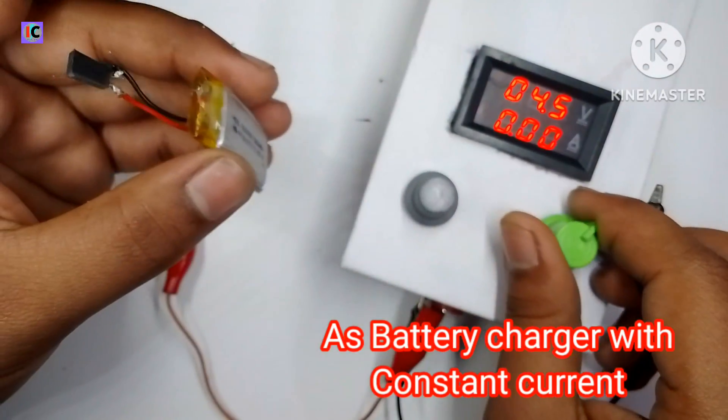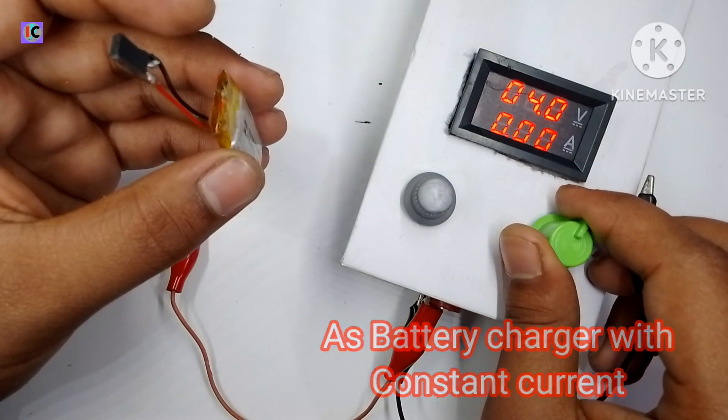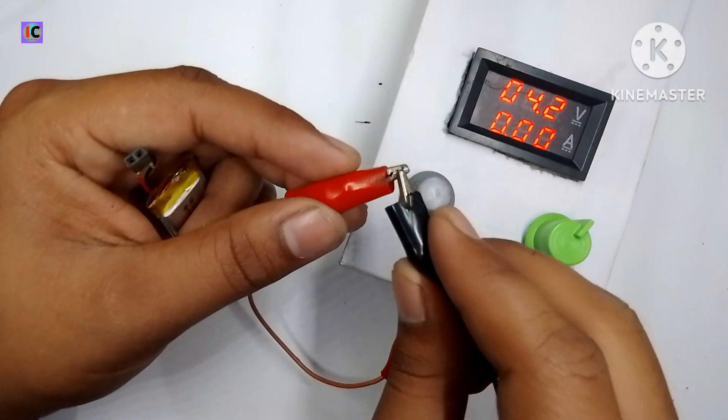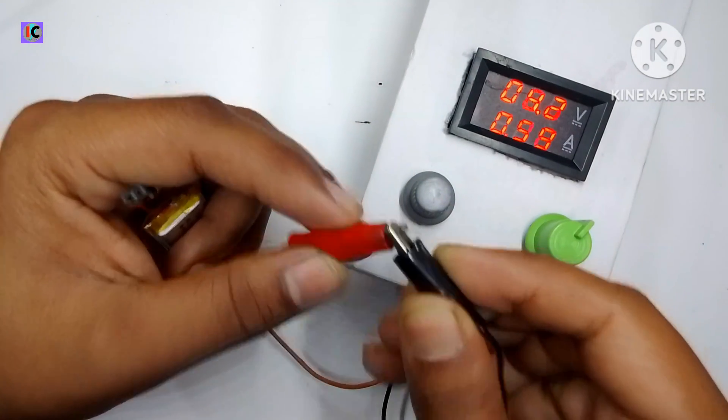And you can see here I am charging a lithium battery which is a 3.7 volt battery and 500 milliampere hour.